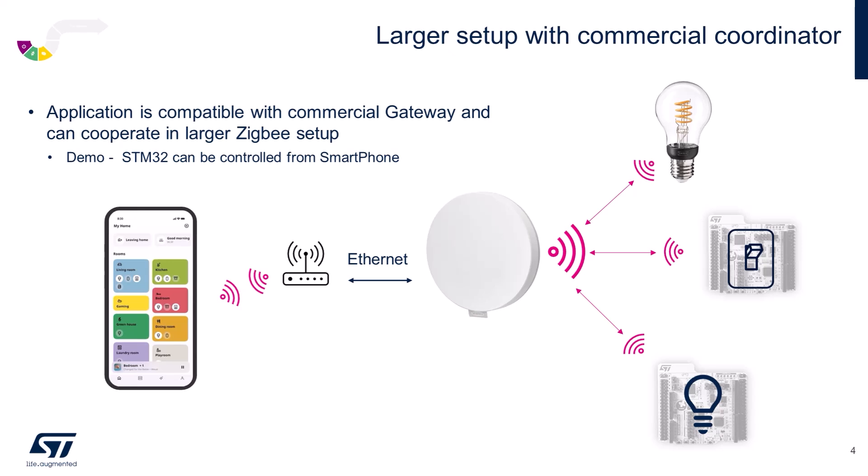These interoperability demos demonstrate the flexibility and compatibility of the STM32WB55, showing how well it works with third-party Zigbee products to create a cohesive smart home or industrial IoT solution. Now let's take a step further and build a more complex setup. In this next demonstration, we will integrate an IKEA gateway into a Zigbee network, allowing us to control multiple devices from a centralized point. The IKEA gateway adds another layer of functionality, giving you the ability to manage and control a variety of devices all from a single app.